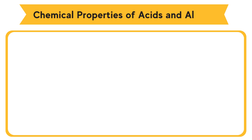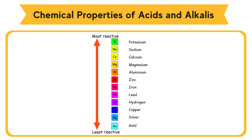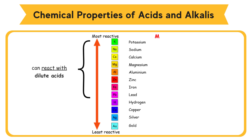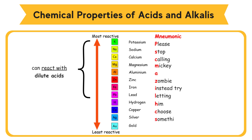Reactivity Series of Metals: Potassium, Sodium, Calcium, Magnesium, Aluminium, Zinc, Iron, Lead, Hydrogen, Copper, Silver, Gold. Note: only metals above Hydrogen in the Reactivity Series of Metals can react with dilute acids. Mnemonic: Please Stop Calling Mickey A Zombie, Instead Try Letting Him Choose Something Goofy.